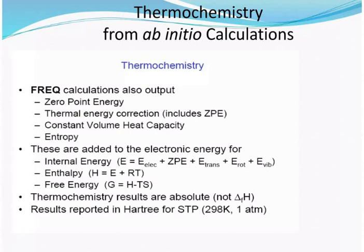How will you calculate the internal energy? E is equal to E_electronic plus zero point energy (ZPE), plus translational energy, plus rotational energy, plus vibrational energy. So in total there are five energy components: vibrational, rotational, translational, zero point energy, and electronic energy.